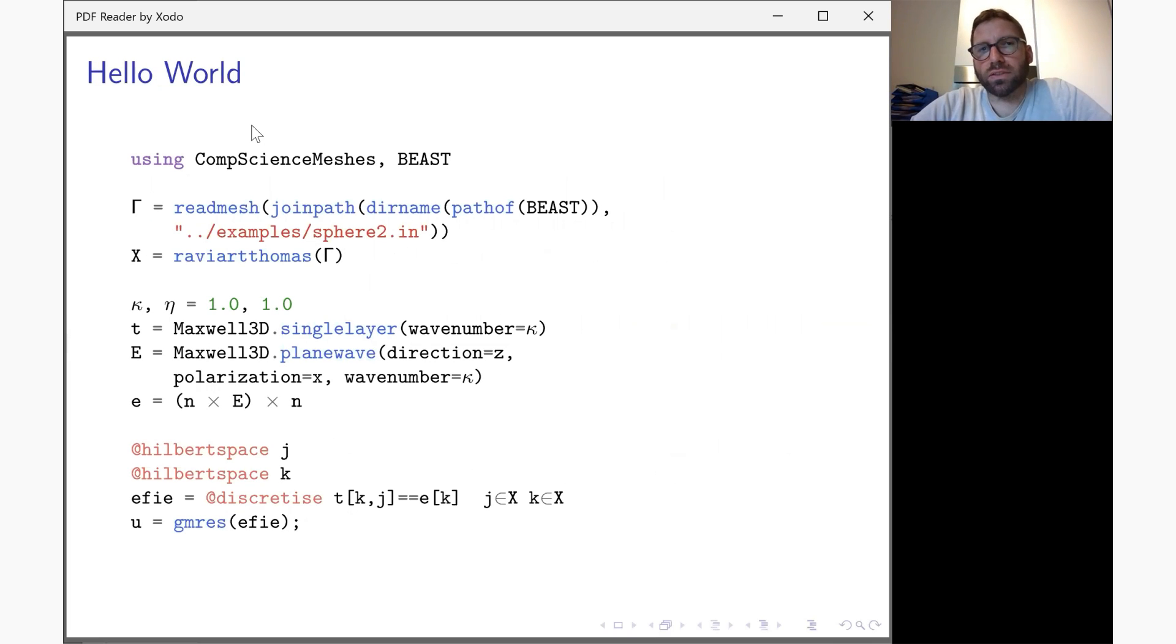To give you an idea how the package is used, this is the proverbial hello world, which actually implements and solves the problem that I talked about, the scattering of a wave by a perfect conductor. Typically you create a mesh. The mesh is, like in many other cases, a type wrapper around the vertex array and an index array. It comes with a rich API that can deal with all the issues that one would typically encounter in the context of boundary element methods.